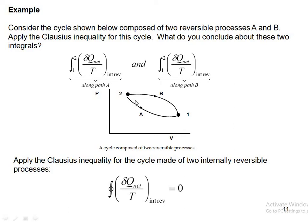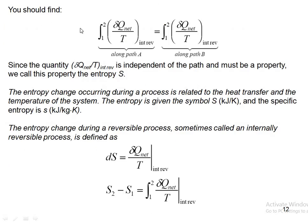Consider a cycle from state 1 to state 2 along path A, and from state 2 back to state 1 along path B, where both processes are internally reversible. Applying the Clausius inequality, the cyclic integral of (δQ_net / T) for this internally reversible cycle is zero. We can write the integral from 1 to 2 along path A equals the integral from 1 to 2 along path B. Since δQ_net / T is independent of path — following path A or path B gives the same value — it is a property.